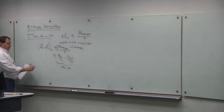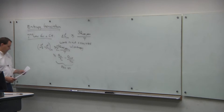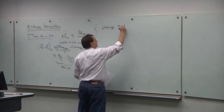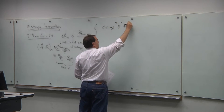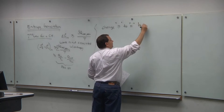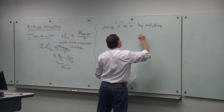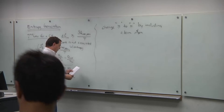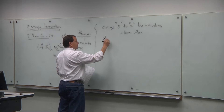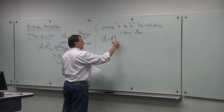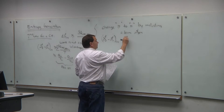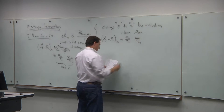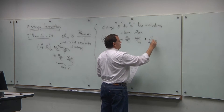We can change the greater-than-or-equal-to sign to an equal sign by creating a term: the entropy generator, S_gen, which is the entropy that's generated. In that case we get the change in entropy, S2 minus S1, for the control mass equals the heat transfer in minus the heat transfer out over the temperatures at which they occur, plus the entropy generation term.